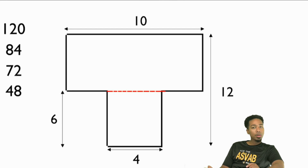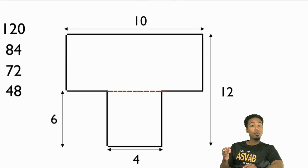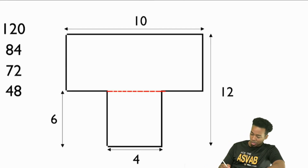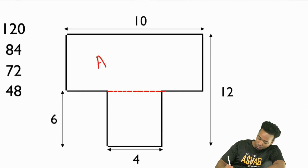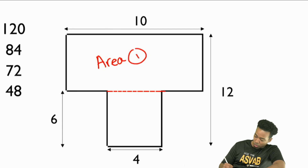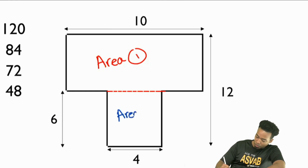The goal of the problem is this: find the area of section one, and then find the area of section two.